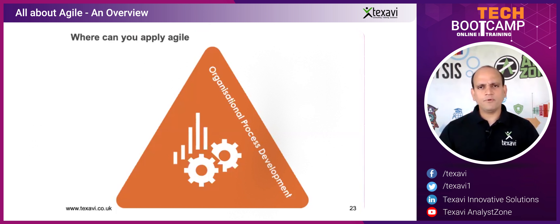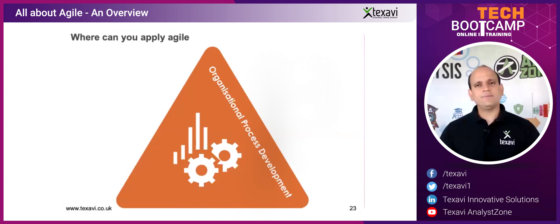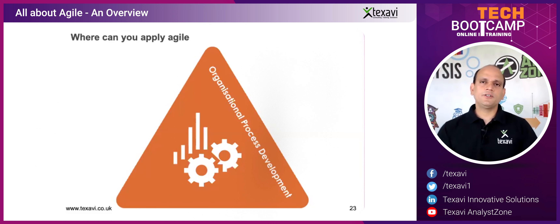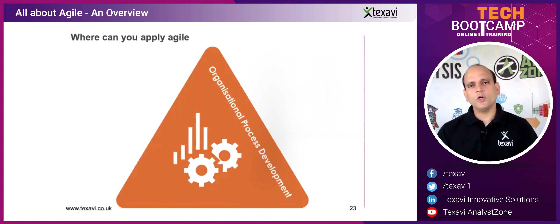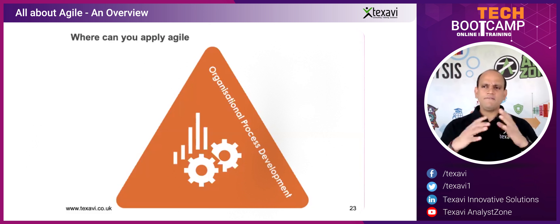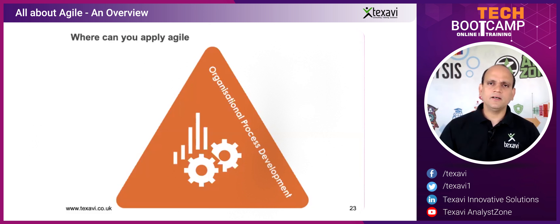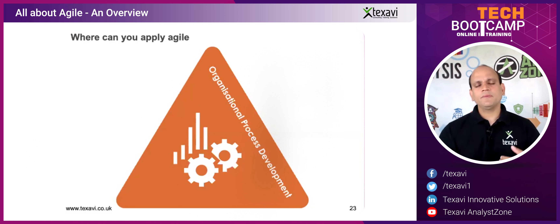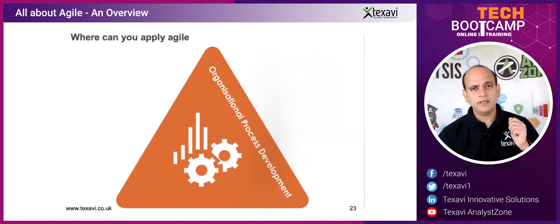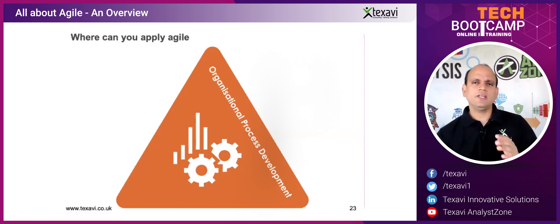You also need an infrastructure team. All these different teams have got different kinds of processes — it could be the HR process, recruitment, training, development, software development, infrastructure procurement — every type of work involved in running that particular e-commerce website. In that context, agile is applicable in pretty much every such situation and scenario.